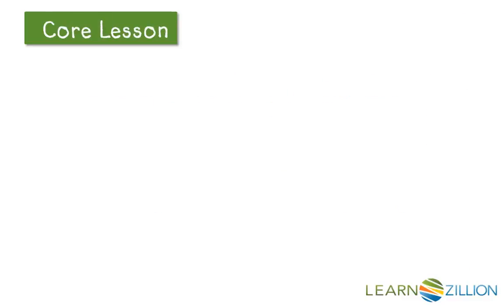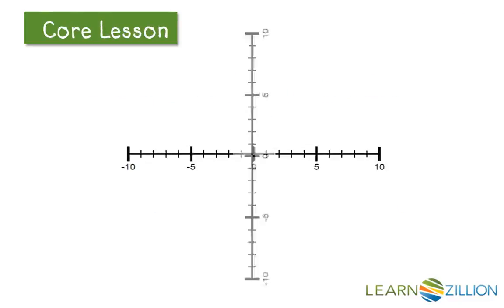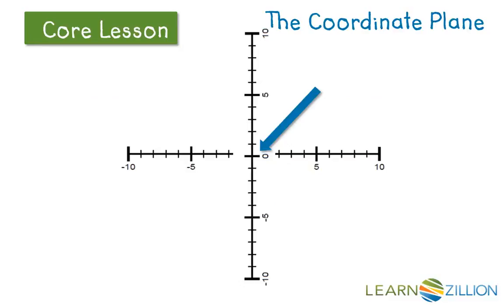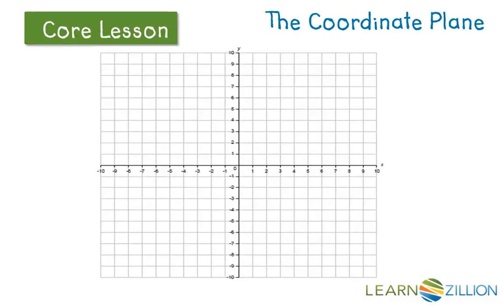If I place a horizontal number line and a vertical number line on top of each other so that they intersect at the zero point, I will create what's called the coordinate plane. The coordinate plane, formed by the intersection of a horizontal and vertical number line, allows mathematicians to see where objects are located in space because it describes movement in two different ways at the same time. The zero point, where the horizontal and vertical number lines meet, is called the origin.